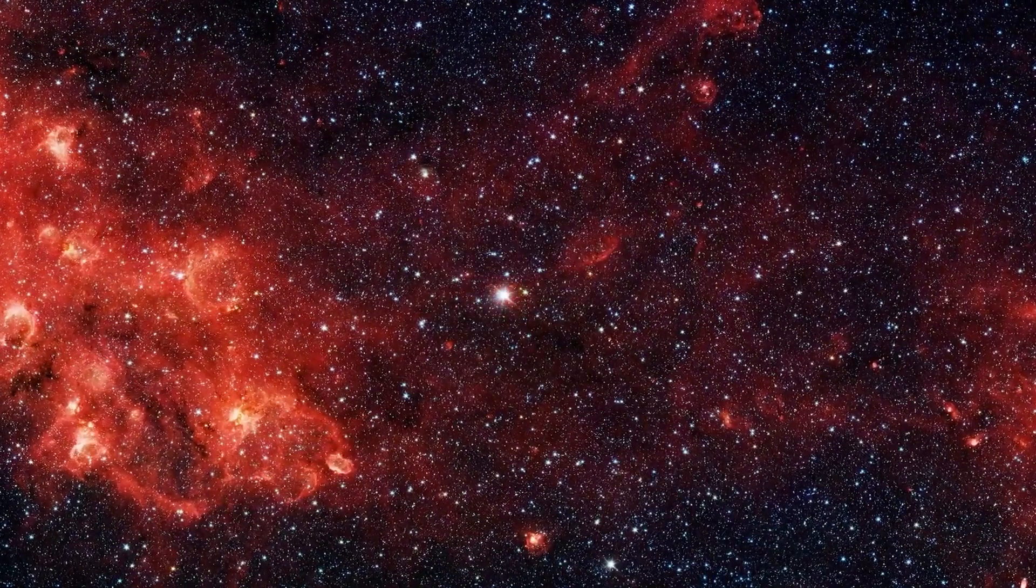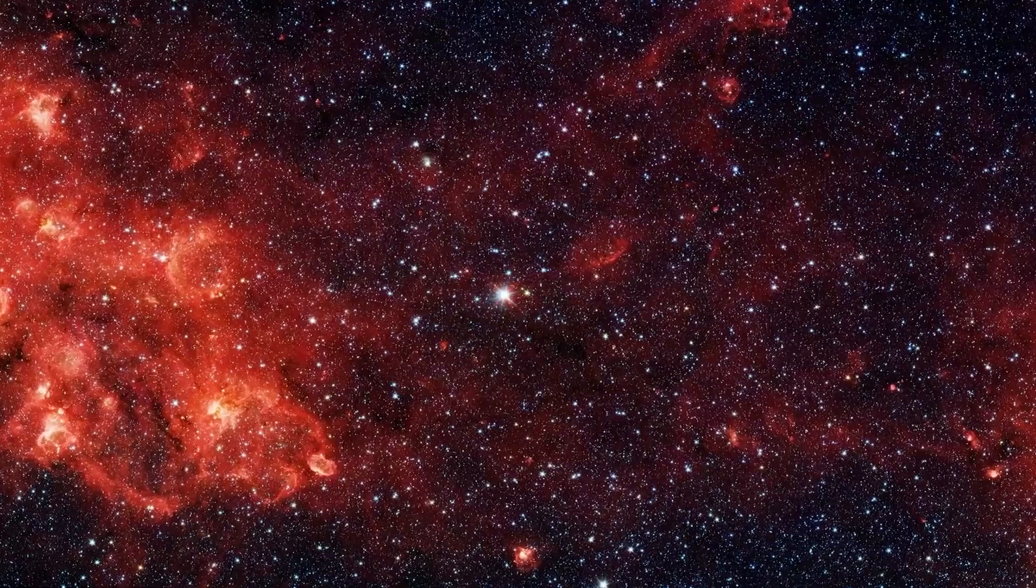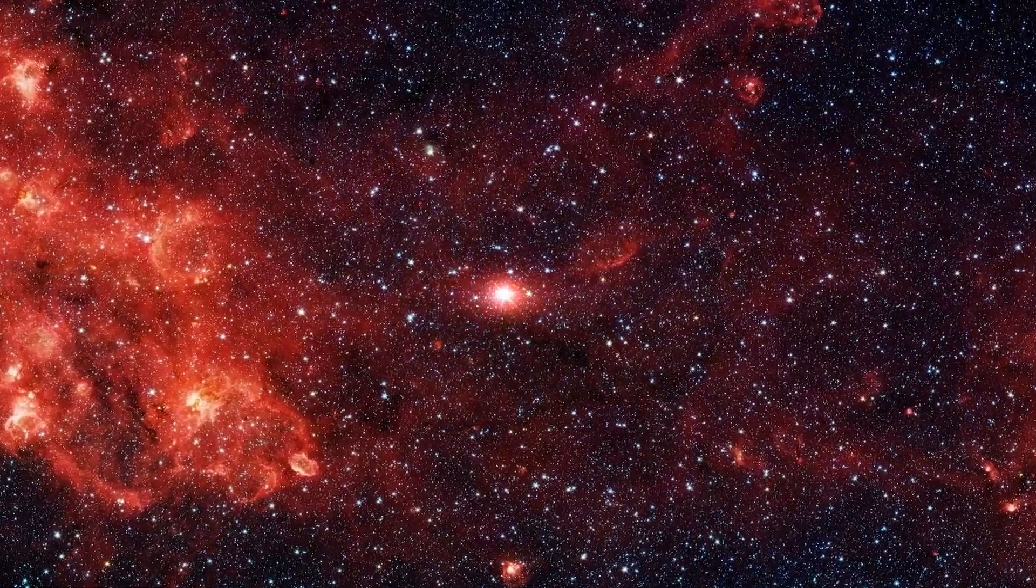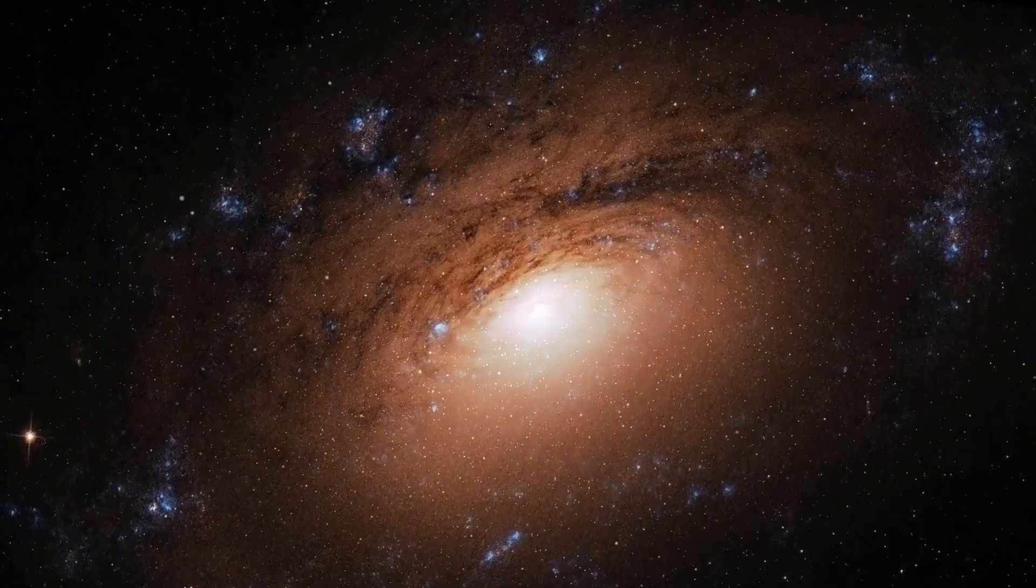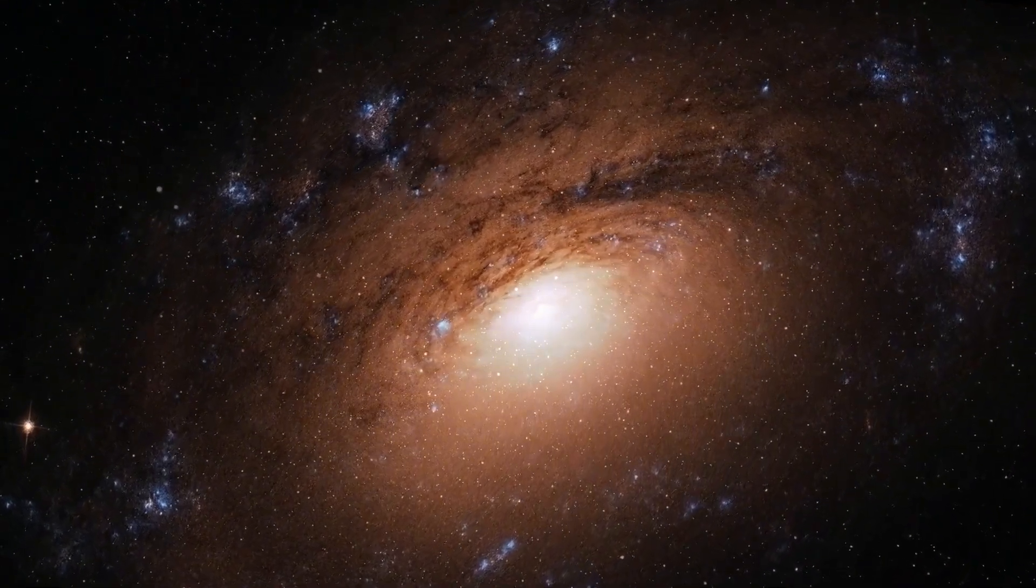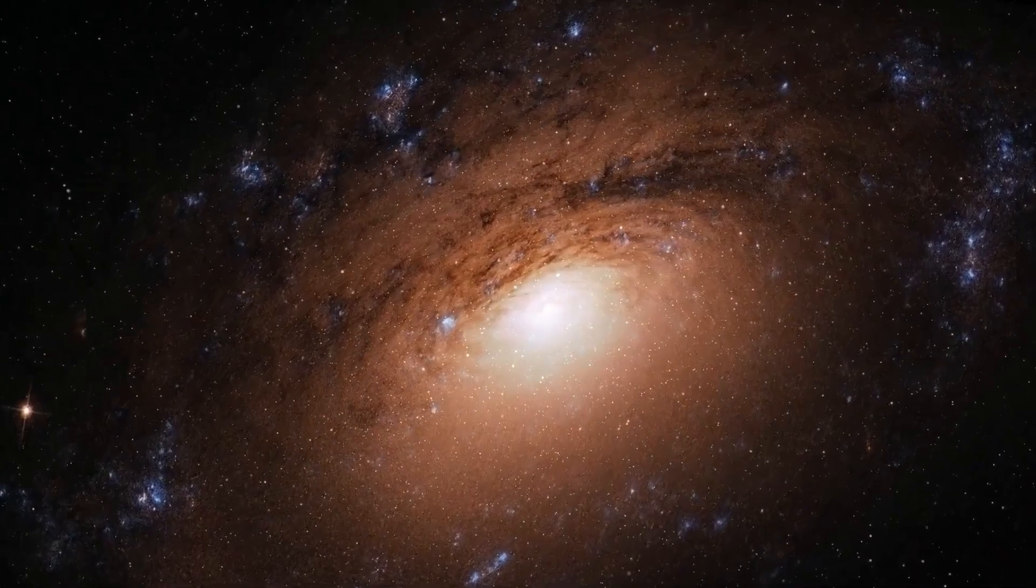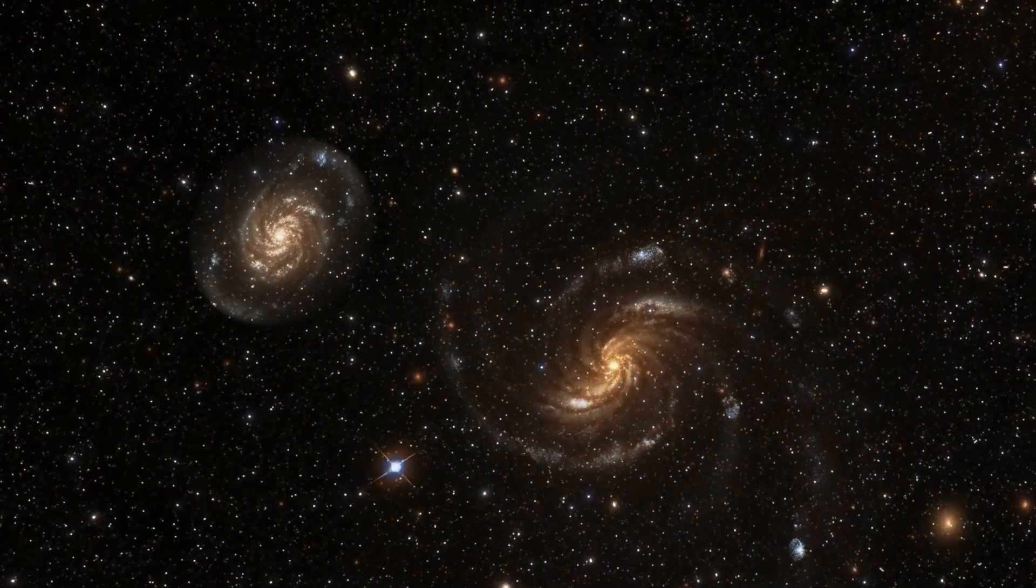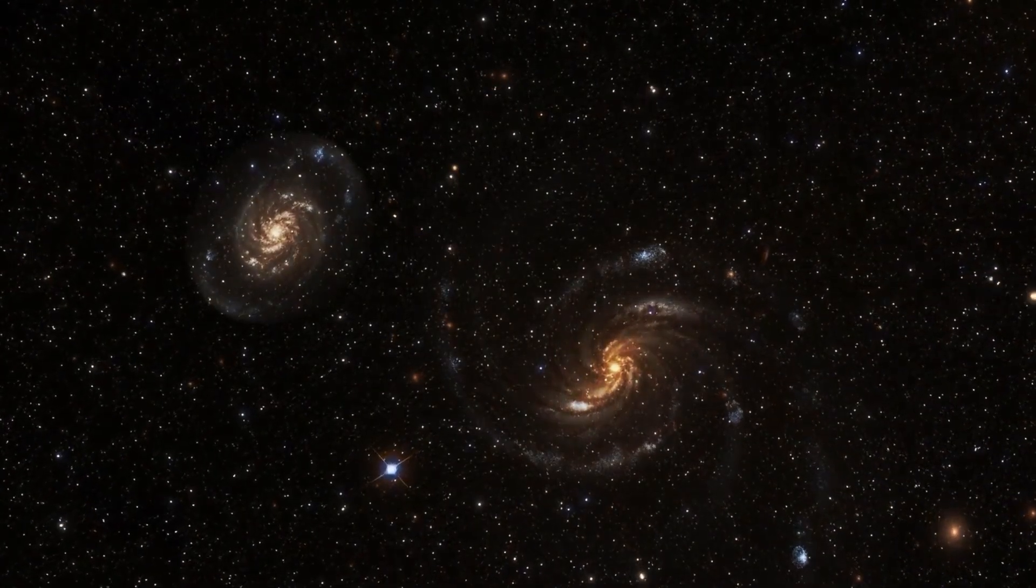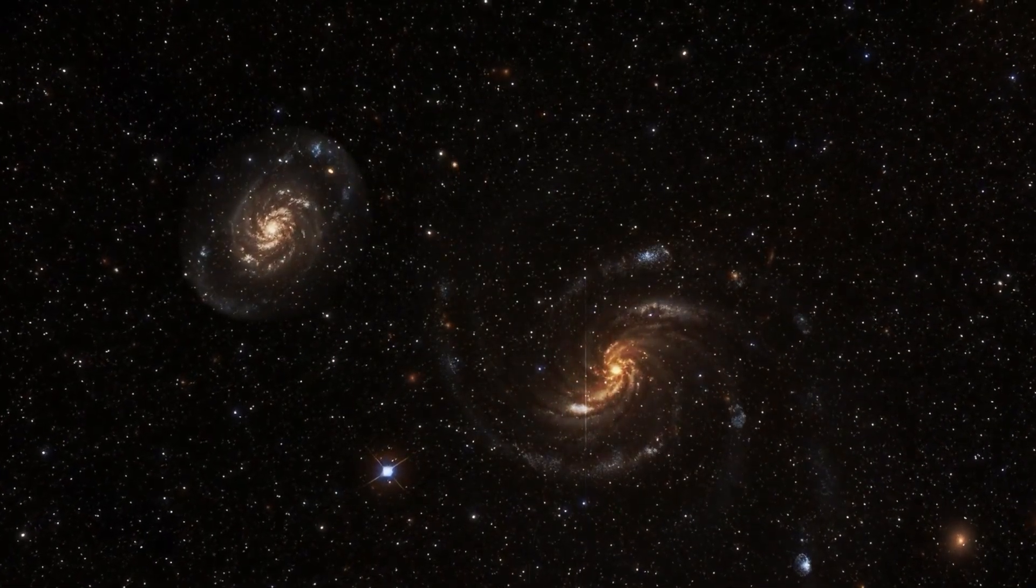As we move away from our galaxy, we find our local group of galaxies, followed by the Virgo cluster, which contains more than 1,500 galaxies. Virgo, in turn, is part of a larger supercluster known as Laniakea, which contains approximately 100,000 galaxies. Each has hundreds of billions of stars and planets.